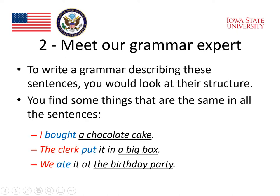To write a grammar describing these sentences, you would look at their structure. You find some things that are the same in all of the sentences. In our example sentences, we identify three things that are similar. The first one is highlighted in red: there is a person at the beginning of the sentence.